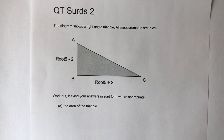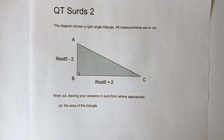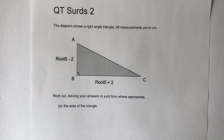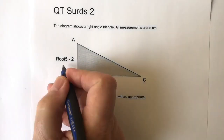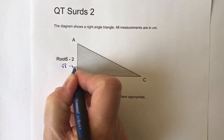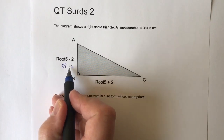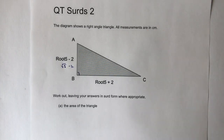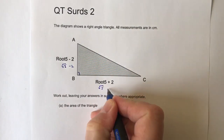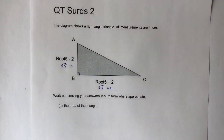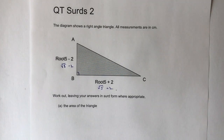In this video we're given a right angle triangle and we're told that the height is √5 minus 2. I've written it that way to avoid confusion about how close the square root sign is to the minus 2. The base is √5 plus 2, and we're asked two questions: first to work out the area, and then in part b to work out the length AC.